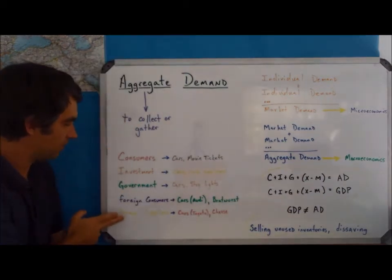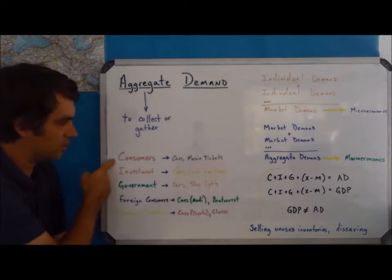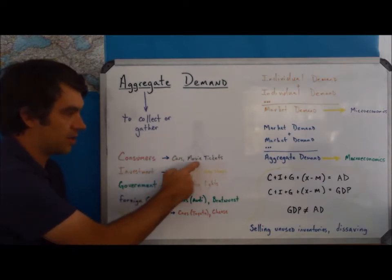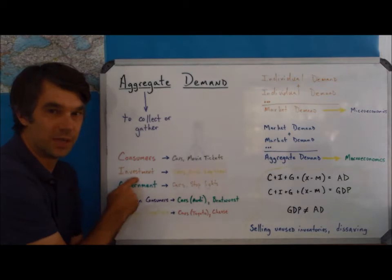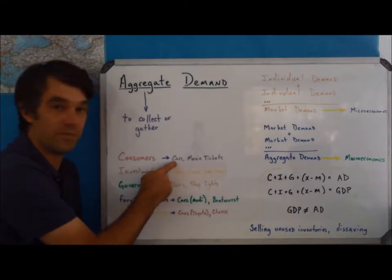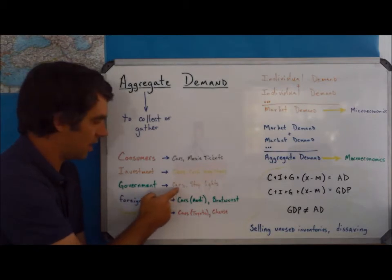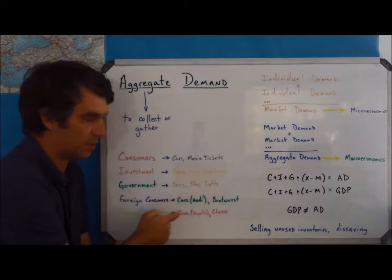If we look at all the people, all the individuals who can demand things: we have consumers, and maybe they demand cars and movie tickets. Investment is the term that we use for business spending on final goods and services. So if a business is buying a car, that's no different from me buying a car. The government, they have a use for cars, so they might buy cars and stoplights.